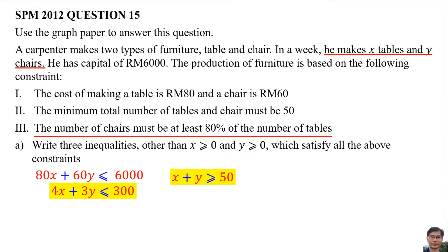The number of chairs must be at least 80% of the number of tables. The number of chairs means Y, the number of tables means X. At least means more than or equals. 80% means 80 over 100. So Y more than or equal 80 over 100 X, then simplify it.